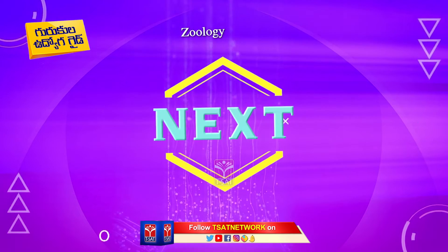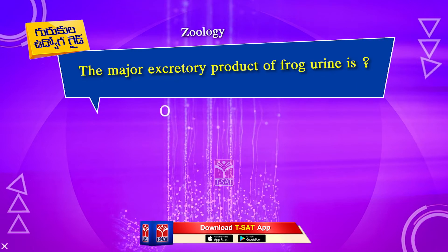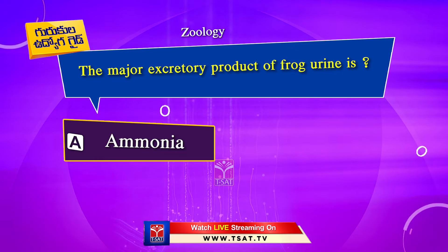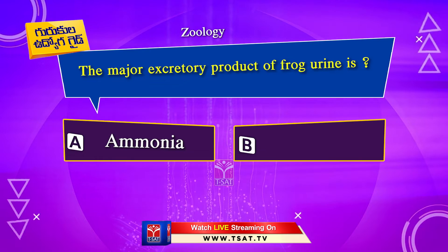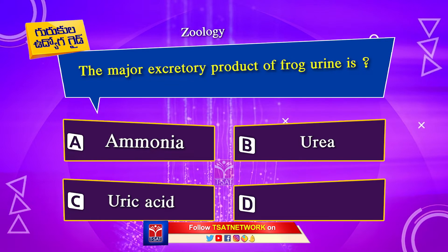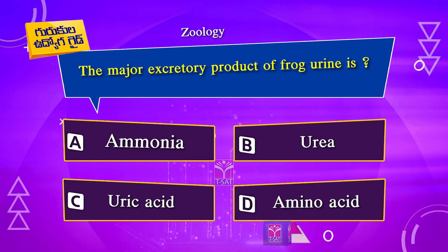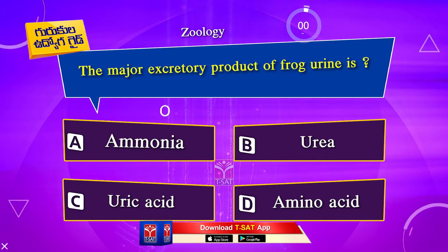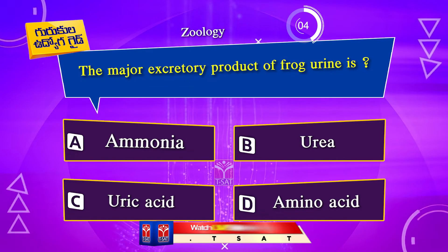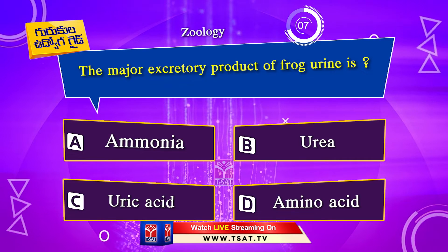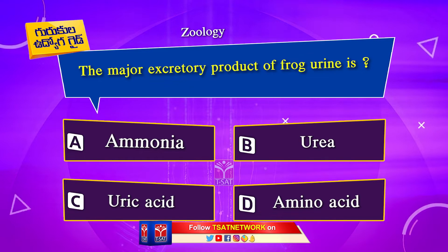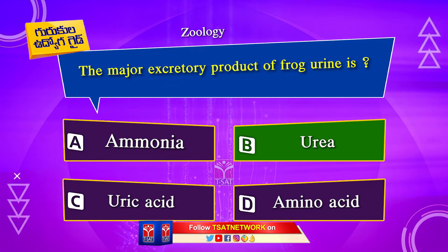Next question. The major excretory product of frog urine is: Option A. Ammonia. Option B. Urea. Option C. Uric acid. Option D. Amino acid. The correct answer is Option B. Urea.